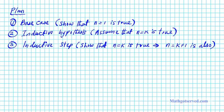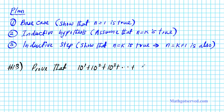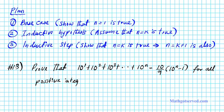For problem 13, we are to prove that the statement 10 to the first plus 10 to the second plus 10 to the third plus dot dot dot plus 10 to the nth power is equal to 10 over 9 times 10 to the n minus 1. That's what we are to prove by induction.